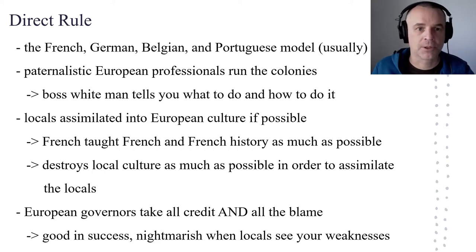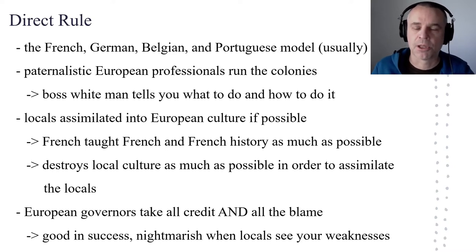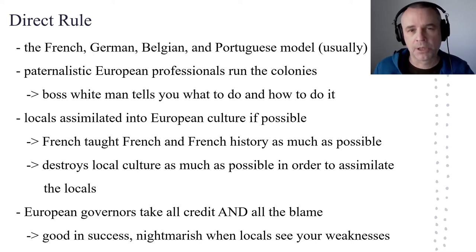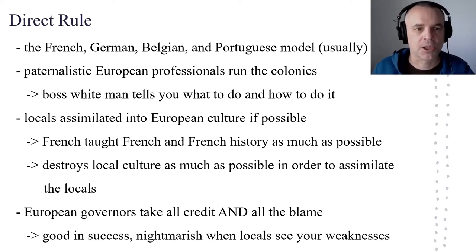White people give the orders, black people take the orders. That is a model that is clear but it has some definite drawbacks. This is largely, although not universally, the method of imperialism for the French, the Germans, the Belgians, and the Portuguese in Africa. And there were places where the British and others ruled directly too, but as a rule of thumb you can assume that the French, Germans, Belgians, and Portuguese were more likely to use direct rule.